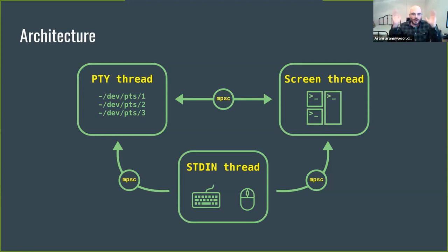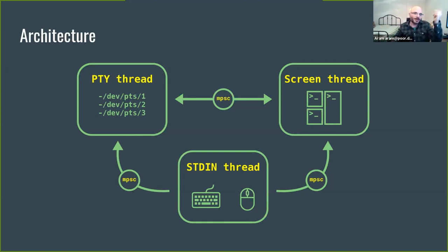Using MPSC instead of Arc Mutex is both faster and better for performance — especially important for the relationship between the PTY and screen threads. Imagine you're tailing a long file and characters keep coming all the time; you don't want any locks there. It's also important if we want to eventually move these threads to different processes — it would be much easier to switch out the MPSC channel for IPC. Let's take a look at an example of an action and how it moves between threads.